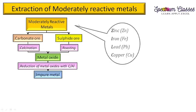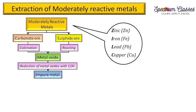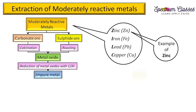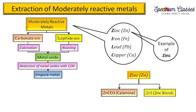Here I will give you the example of moderately reactive metals. Zinc, iron, lead, and copper are present in the middle of the reactivity series. These metals are commonly found in the form of carbonate ores as well as sulfide ores. Let us discuss with the example of zinc — zinc is found in the form of zinc carbonate as well as zinc sulfide.